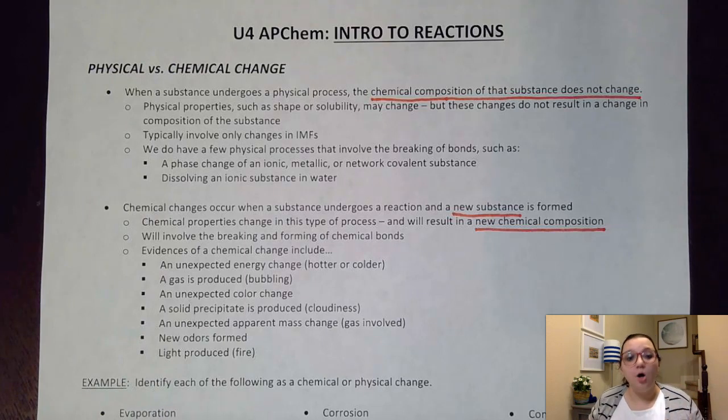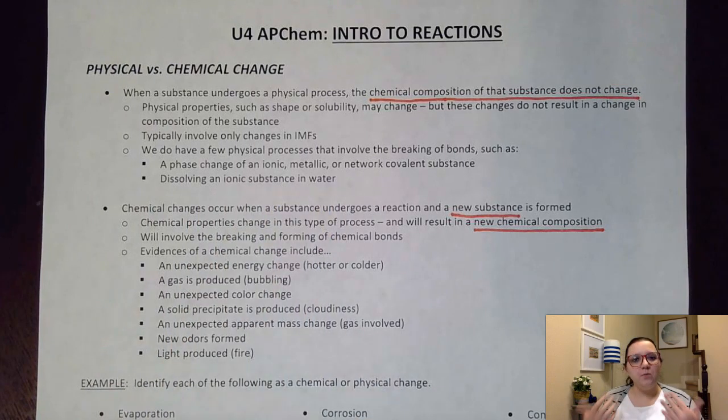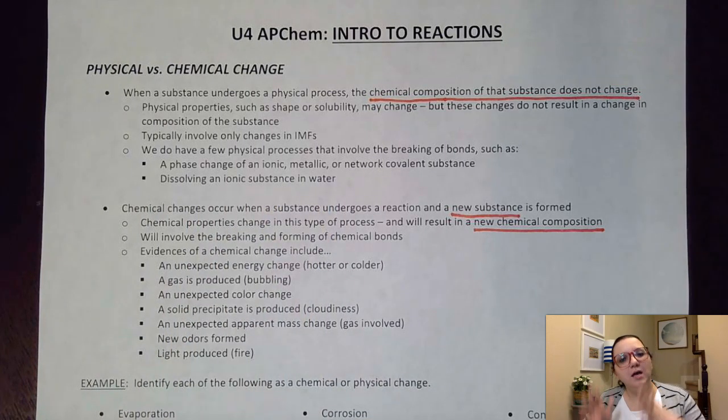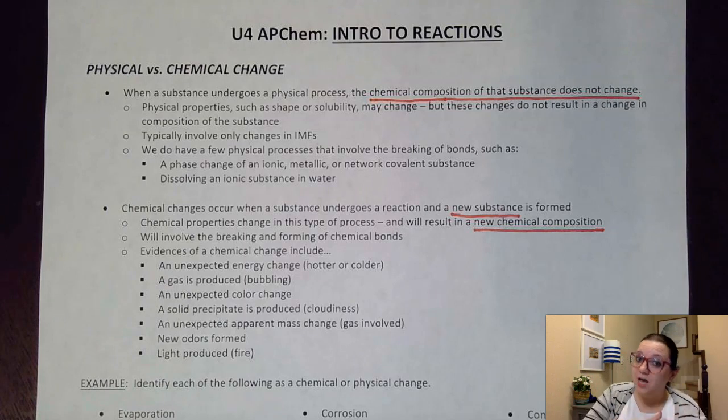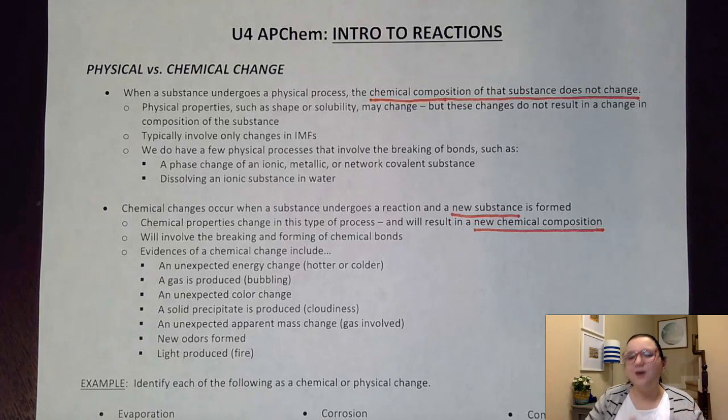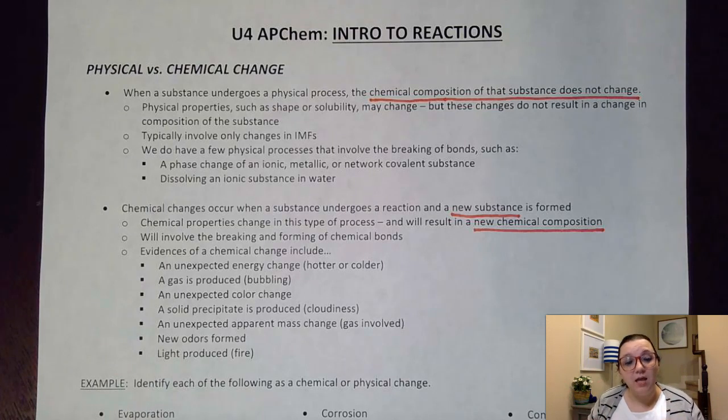Same thing goes for dissolving an ionic substance in water. Hopefully we remember that I would break those ionic bonds in order to form ion-dipole forces with the water. And so I technically did break some bonds there. And so it's kind of, again, that gray area. It is technically considered a physical change because I could reverse it very easily by just evaporating back off the water, as well as the fact that I didn't really change the chemical composition. Yes, I broke the bonds, but the formulas of those substances would still be considered the same.